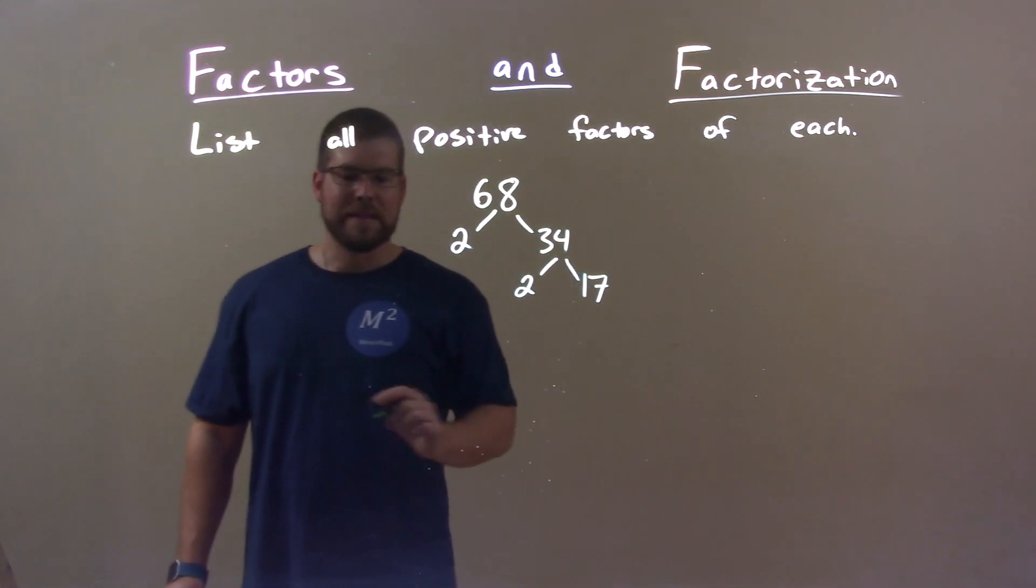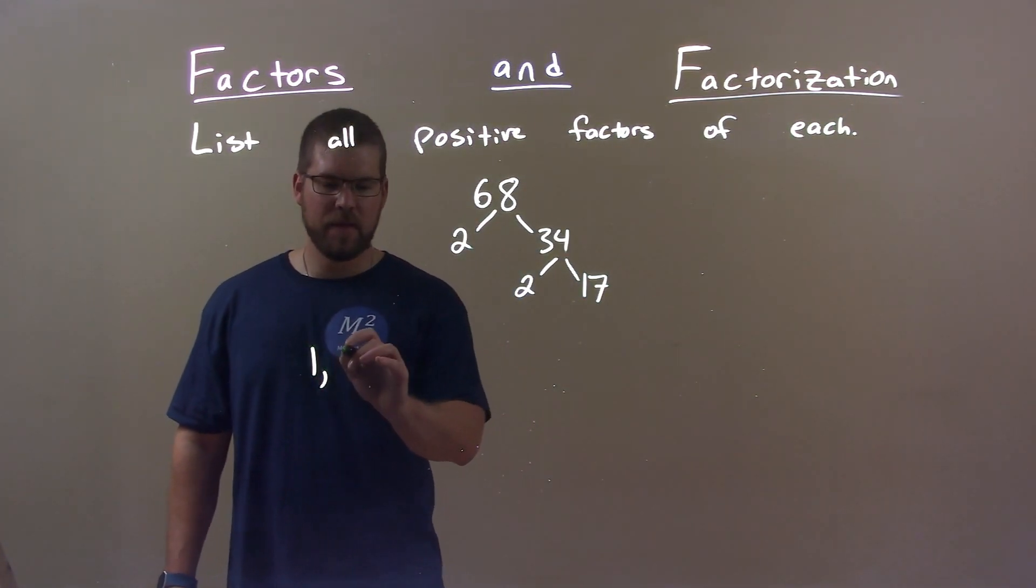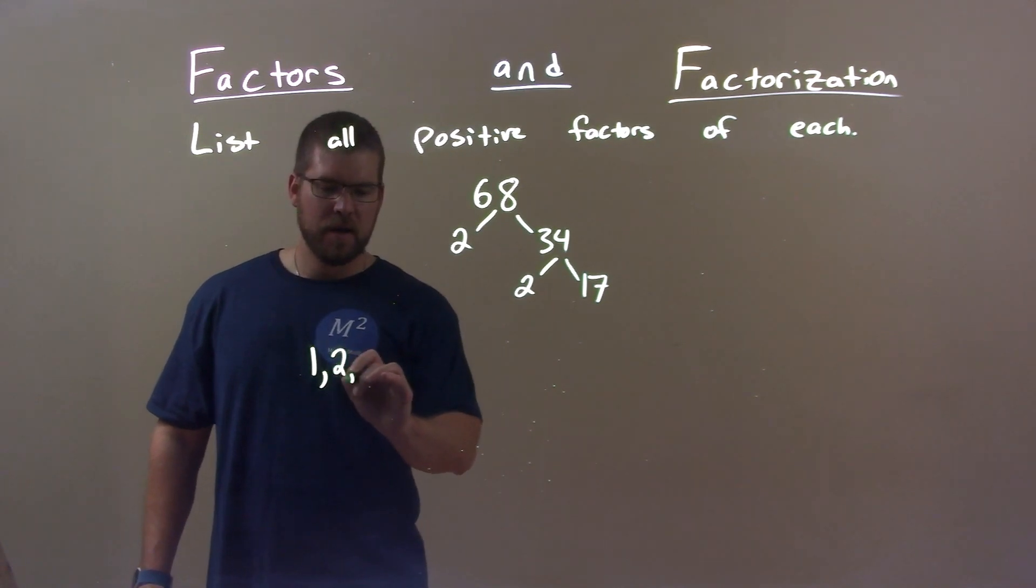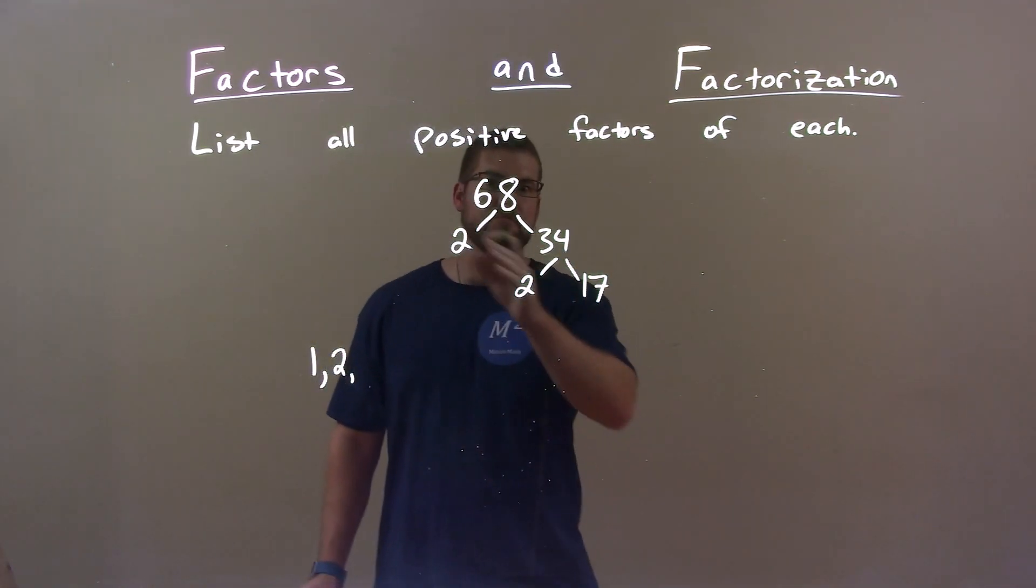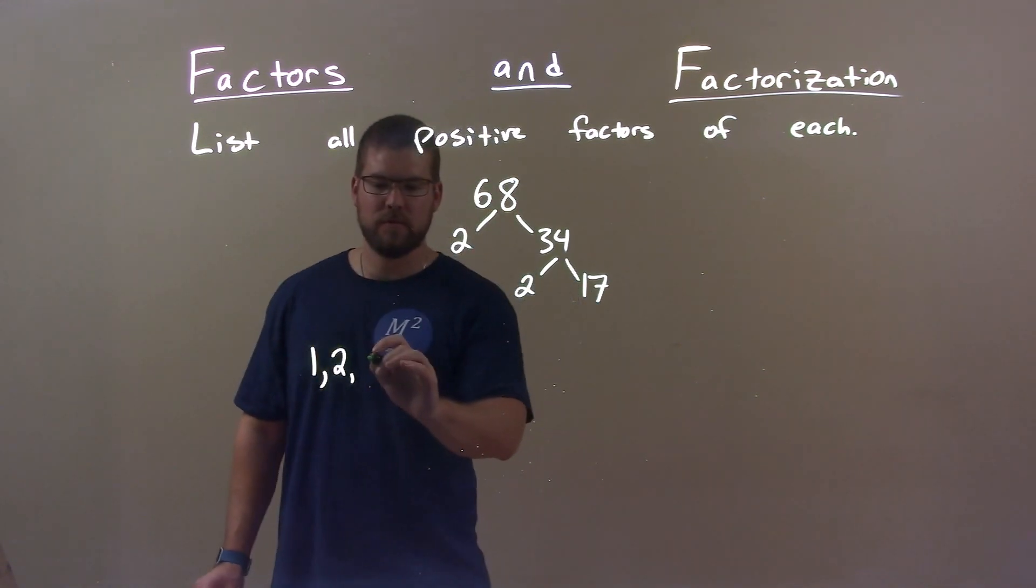So let's go make our list. 1 will always go into 68 and then 2 is on our list here. Now, we only can make numbers that multiply, right, with our prime numbers. 2 times 2 is 4. Great.